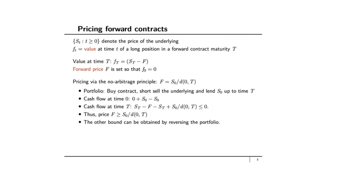We want to understand how to price these contracts — how does one set the forward price capital F? Let S_t denote the price of the underlying on which the forward contract is written; it changes over time. Little f_t will denote the value at time t of holding a long position in the forward contract with maturity capital T. A long position means you have the right to buy — you've purchased this underlying forward contract.